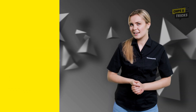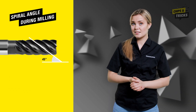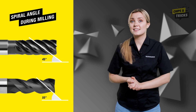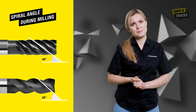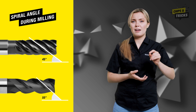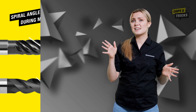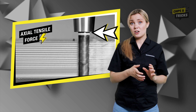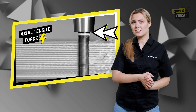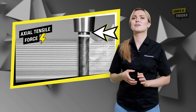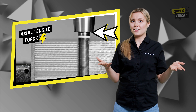The axial tensile force is generated primarily as a result of the spiral angle during milling. A quick spiral angle can be beneficial — it ensures a soft cut. However, the greater the spiral angle, the greater the axial tensile force. The rotation of the tool in conjunction with the cutting force pulls the tool out of the tool holder.